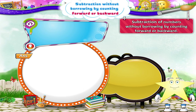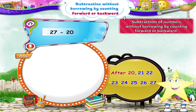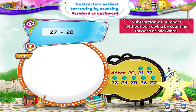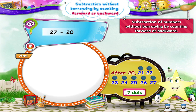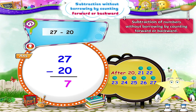Can you tell me another example? Ok. 27 minus 20. So let's draw one dot for every number after 20. Here: 21, 22, 23, 24, 25, 26, 27. How many dots have we drawn till the number 27? Yes, 7 dots. So Starry, 27 minus 20 equals 7. This method is simpler for bigger numbers, Starry.